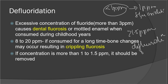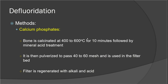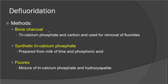For defluoridation, various methods are used. One common method is the addition of calcium phosphate — the bone is calcinated at 600 degrees Celsius for 10 minutes, followed by mineral acid treatment, then pulverized and used as a filter bed. Once the filter is exhausted, it is regenerated with alkaline solution. Other methods include adding bone charcoal, synthetic tricalcium phosphate, and the Fluorex method.